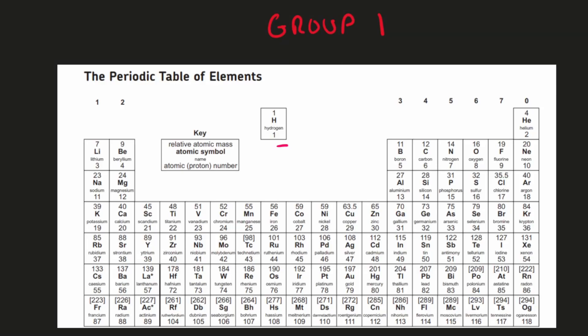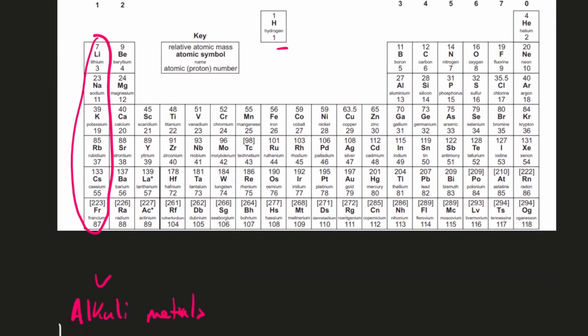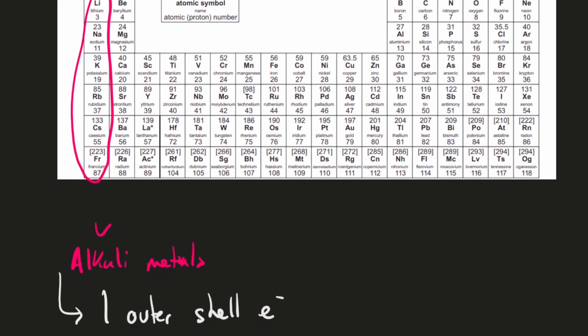Now let's look at Group 1 in more detail. The Group 1 elements are over here and these are called the alkali metals. One thing about all Group 1 elements is they all have one outer shell electron in common.